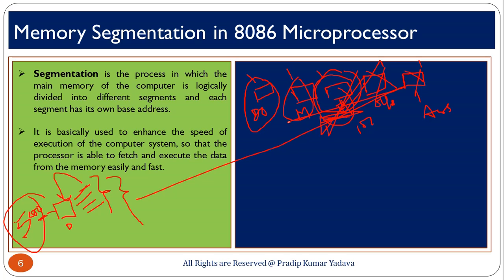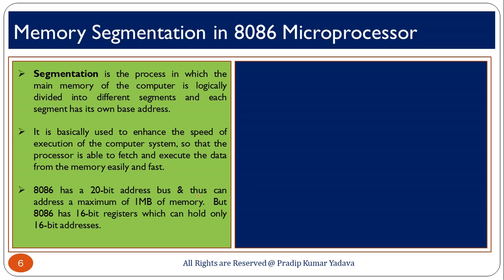So segmentation is required because segmentation saves your time. That is why people create multiple drives in their computer systems — to easily save and access data. For example, I have created 5 drives: in one I store something specific, in another something else, and whatever I want to access I search in that particular drive instead of searching through all drives. This is also the importance of memory segmentation in 8086 microprocessor. You know 8086 has a 20-bit address bus, thus it can address up to 1 megabyte of memory.